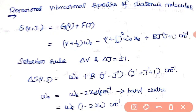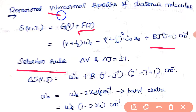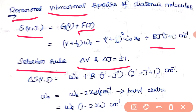The selection rule is ΔV = ±1 and ΔJ = ±1. In the S value for rotational vibrational spectra, the spectroscopic term value ΔS is calculated as the difference between the excited state value and the ground state value, in terms of V and J.